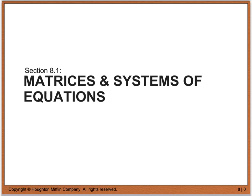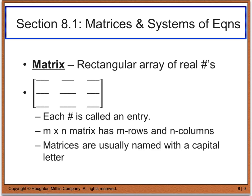For 8.1, this is Matrices and Systems of Equations, and we're going to start out looking at what matrices are. I know you've had this before, so this should be a review and a brush-up. If you recall from your Algebra 2, a matrix is a rectangular array of real numbers. Here we have a sample matrix made up of 3 rows that run horizontally, and in this case 3 columns which run vertically.